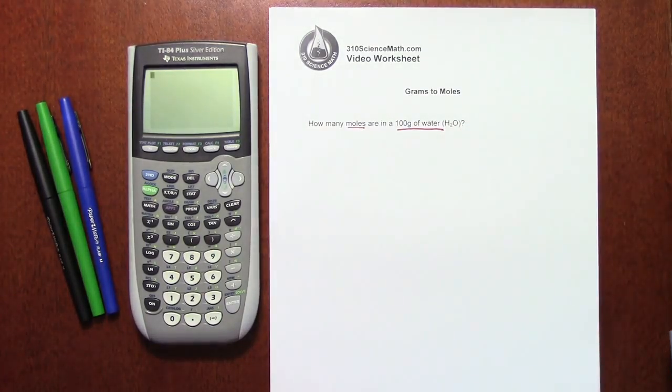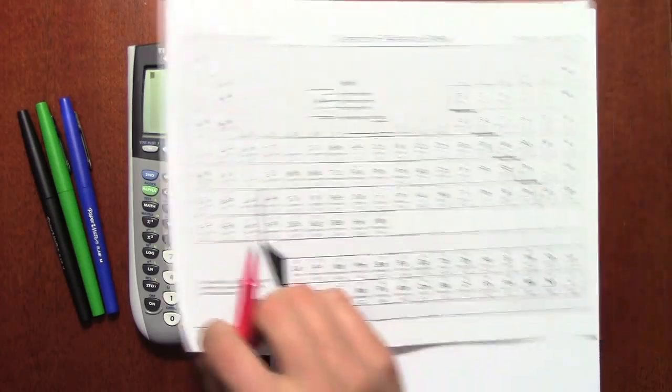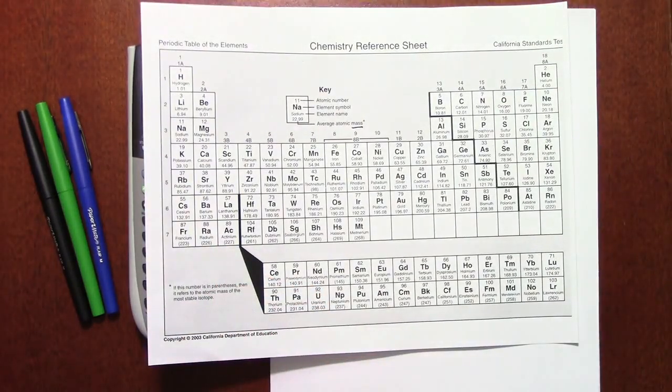how many moles are in 100 grams of water, which of course is H2O. Now, any time that you're dealing with a grams problem, or any problem that involves grams, you're going to need a periodic table.